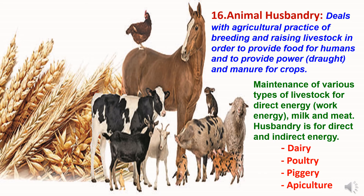The sixteenth branch of agriculture is animal husbandry. Animal husbandry deals with agriculture practices of breeding and raising livestock in order to provide food for humans and to provide power, draught and manure for crops. Maintenance of various types of livestock for direct energy like work energy, milk and meat. Animal husbandry includes dairy, poultry farming, piggery and apiculture etc.